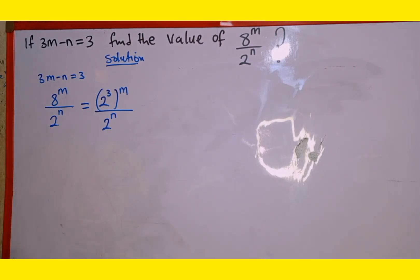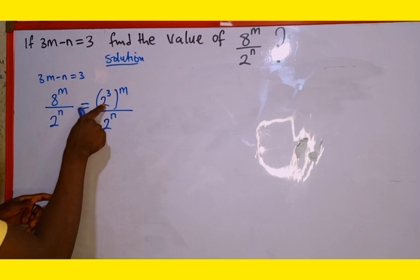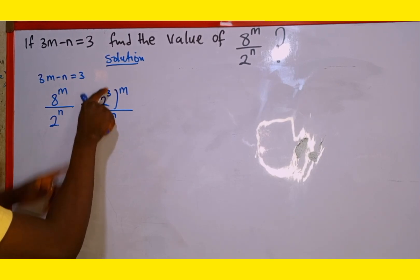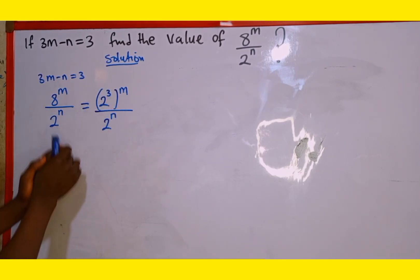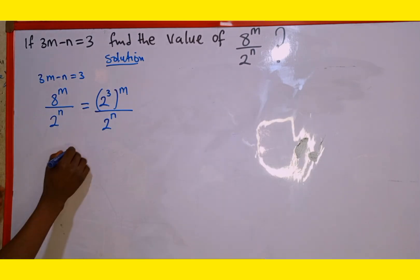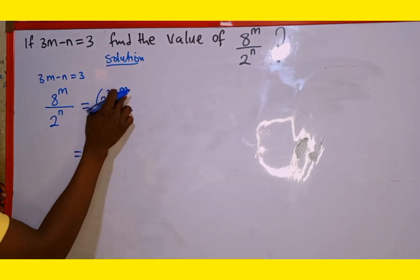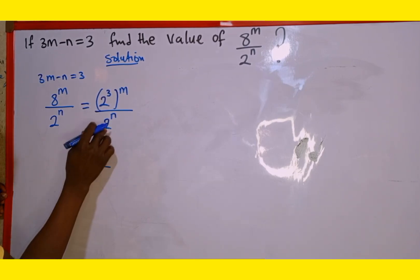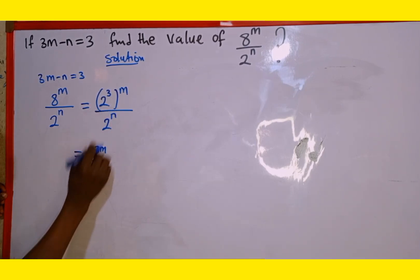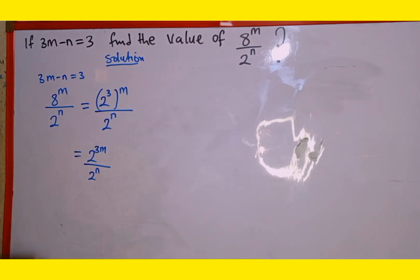Now, according to the power law of indices, when a base is raised to a power and all of that is raised to another power, we are free to multiply the two powers together. So we are going to have 2 to the power of 3 multiplied by m, which gives us 3m, over 2 to the power of n.